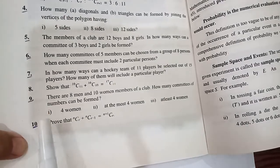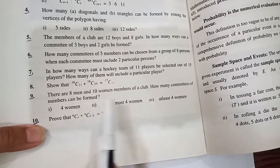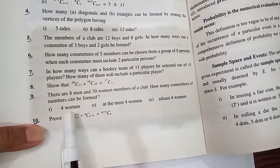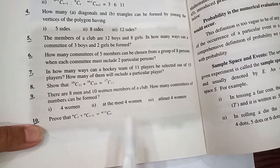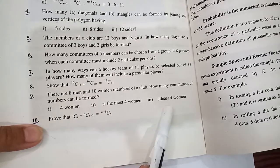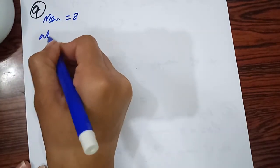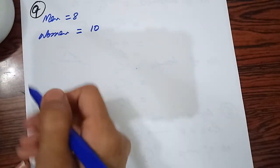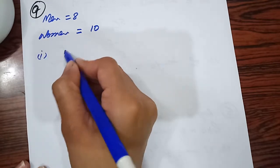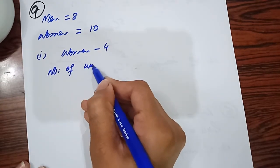Question number 9: There are 8 men and 10 women members of a club. How many committees of 7 members can be formed? Teen parts hain: exactly 4 women, at most 4 women, at least 4 women. Pehla part - exactly 4 women fix karna hai toh number of committees = 10C4.